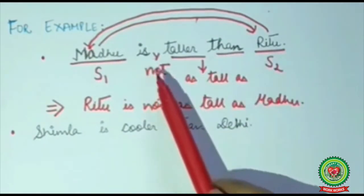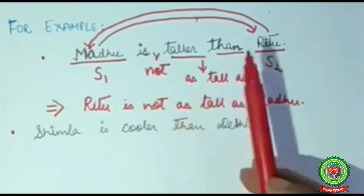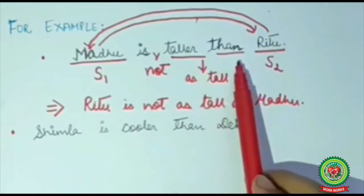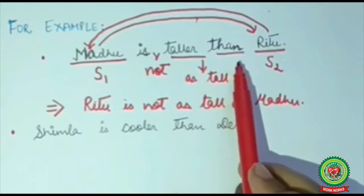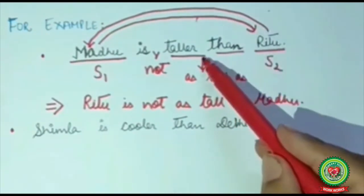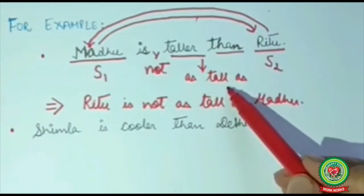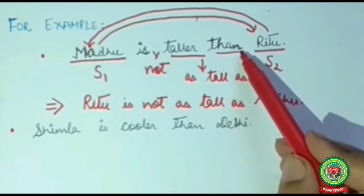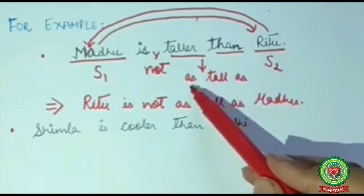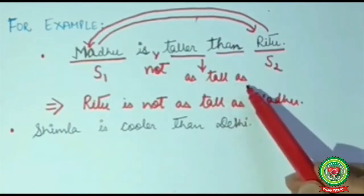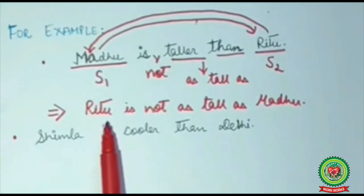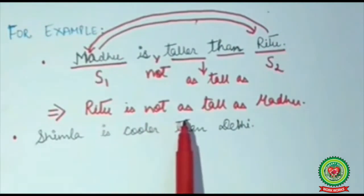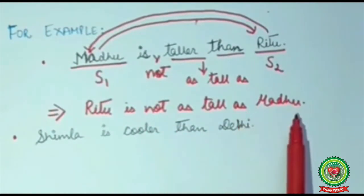Since it is a positive sentence, we will change it into a negative sentence by adding 'not' after the helping verb. 'Taller than' tells us it is comparative degree, so 'taller' will change into 'tall' and the bodyguard 'than' will change into 'as — as'. So the answer would be: 'Ritu is not as tall as Madhu.'